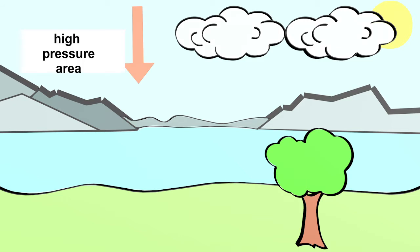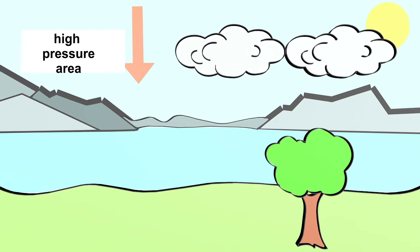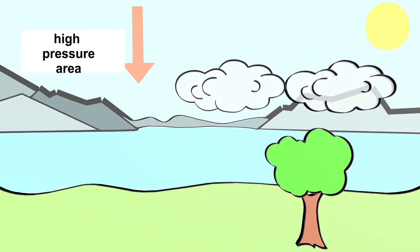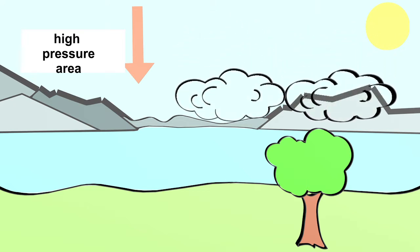In a high-pressure area, the air moves downwards from the heights. It practically presses on the earth. Clouds are also pushed downwards. Clouds are nothing more than tiny drops of water or ice crystals. The deeper the cloud sinks, the warmer the air that surrounds the cloud. The ice crystals begin to melt, and at some point the small water drops evaporate into invisible water vapor. Because of this, we can usually see the sun in a high-pressure area.